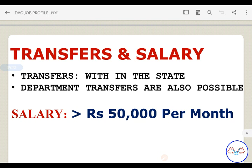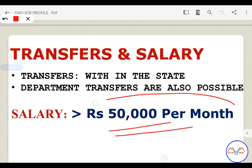Regarding salary: as a DAO Grade 2, you will get more than 50,000 per month. After a pay commission, it may reach around 1,00,000. In every district there is an engineering division, so postings are available across the state.